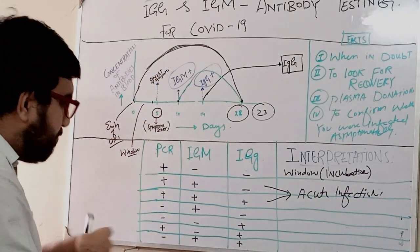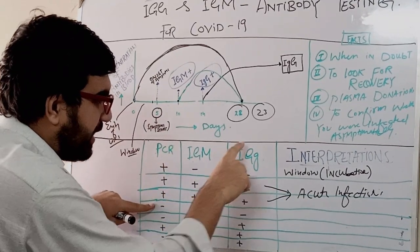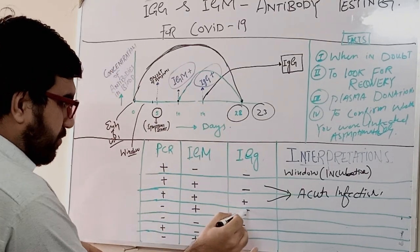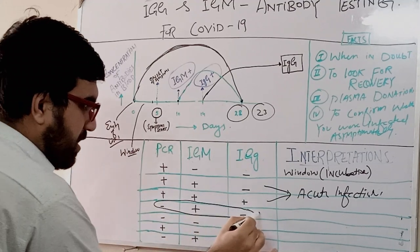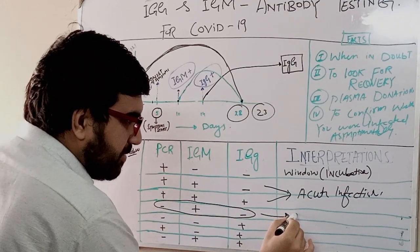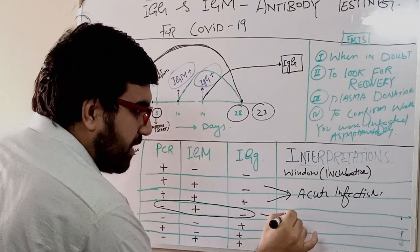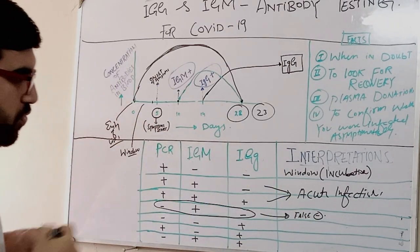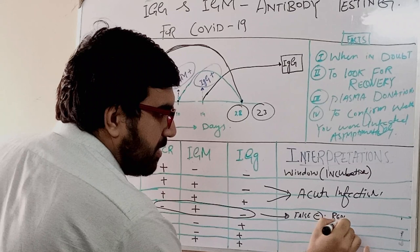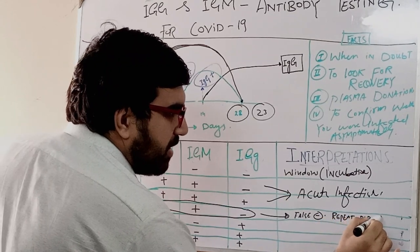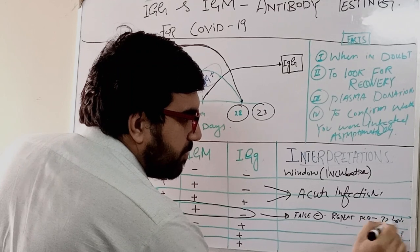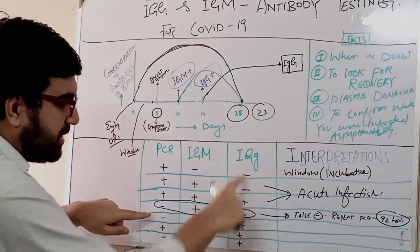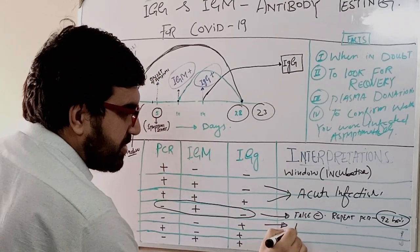The fourth combination: PCR is negative, IgM is positive, IgG is negative. This is really important and commonly seen. It means the negative PCR is a false negative — so you repeat the PCR in 72 hours. Fifth: PCR is negative, IgM is negative, IgG is positive — this shows recovery; the patient has recovered and has antibodies and can donate plasma.